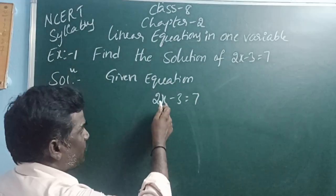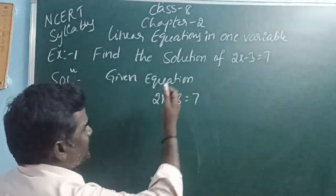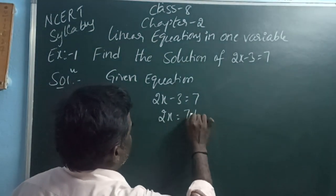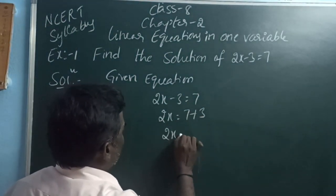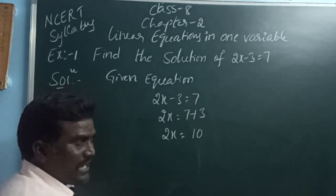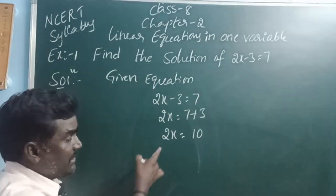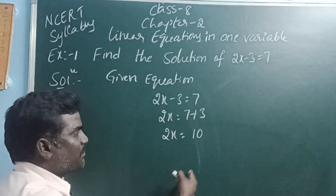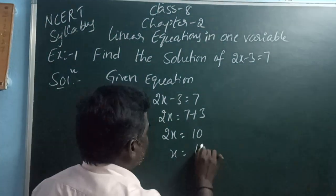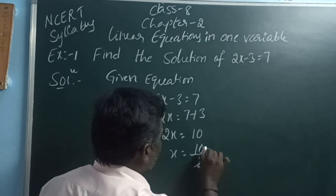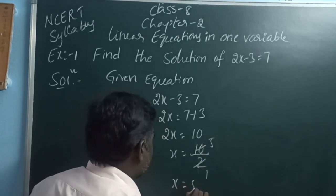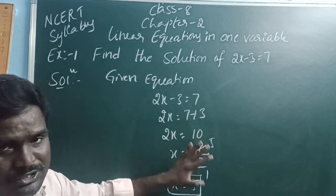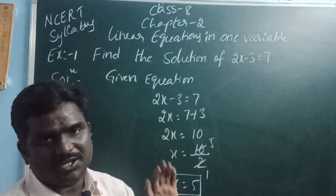Here we want the variable. Minus 3 is moving to the right side and becomes plus. So 2x is equal to 7 plus 3, which is 10. Now the variable is multiplied with 2. The 2 is moving to the other side and becomes divide. So x is equal to 10 by 2, which gives x is equal to 5.